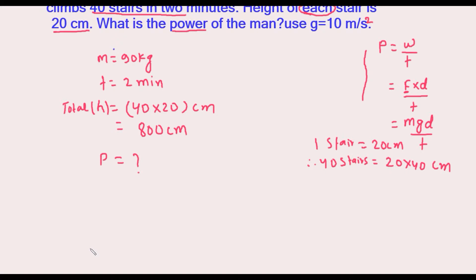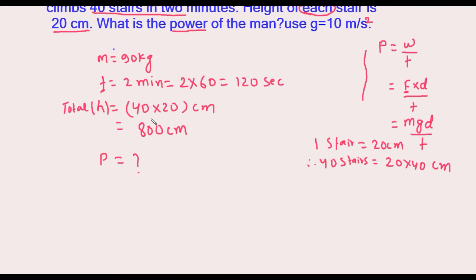We have to convert to SI units. The unit of time is seconds, but it is given in minutes, so we convert to get 120 seconds. The height is also given in centimeters, so it becomes 8 meters.